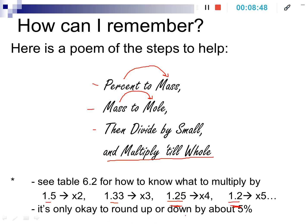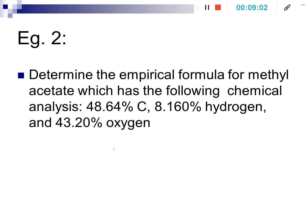Some rounding is okay — about 5% or so. So if you have 1.999, that's definitely okay to round up to 2. Even 1.95 is probably fine to round up to 2 as well. Let's try an example. We want to find the empirical formula for a particular molecule. We find that the percent of carbon is 48.64, the percent of hydrogen is 8.160, and the percent of oxygen is 43.20.